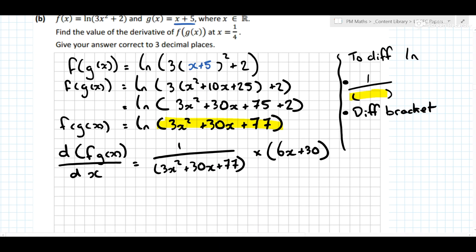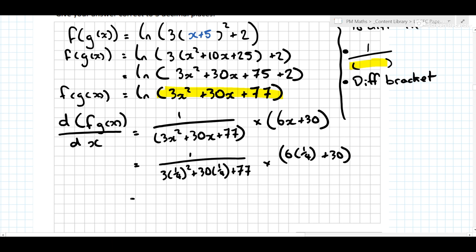Now, we need to then apply x is equal to a quarter. So 1 over 3 times a quarter squared plus 30 by a quarter plus 77, multiplied by 6 times a quarter plus 30. Now, at this point, you can put all of that into your calculator in one step, if you're good enough with your calculator. Just take your time if you're not that confident with it, and you will get 0.372 to two decimal places.